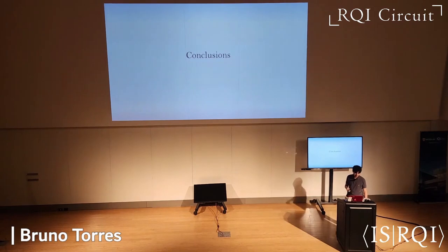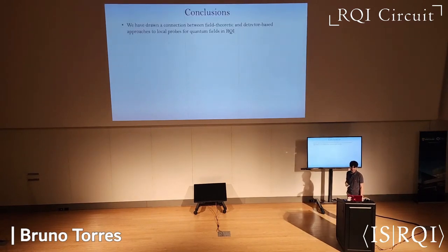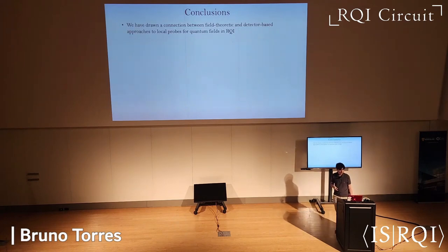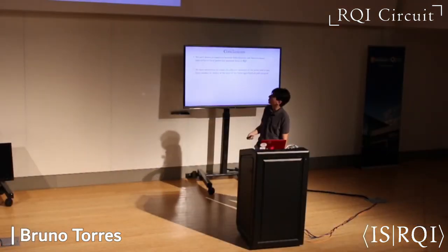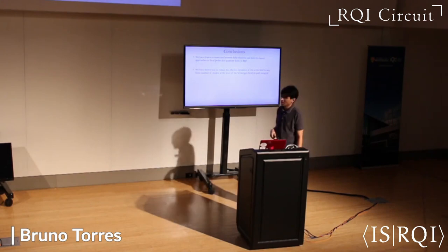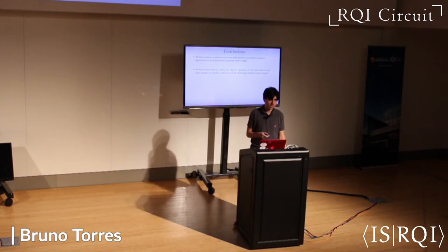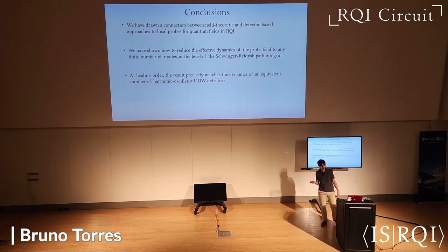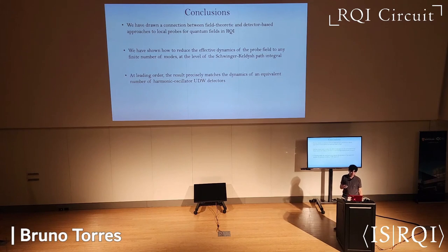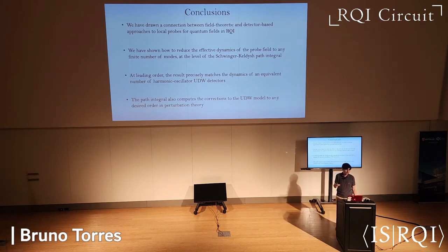The takeaway is that we have drawn a connection between field-theoretic and detector-based approaches to local probes in RQI. We showed a systematic way to reduce the effective dynamics of a probe field to any select finite number of modes using the Schwinger-Keldysh path integral, and shown that at leading order the result matches what you'd obtain from a finite number of Unruh-DeWitt-like harmonic oscillator detectors coupled in the usual way, for arbitrary input states of the probes and the field.